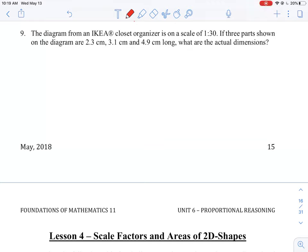Okay, let's take a look at question number nine here where we have a closet organizer that has a scale of 1 to 30. So the first thing we need to look at here is what does that scale mean for 1 to 30.